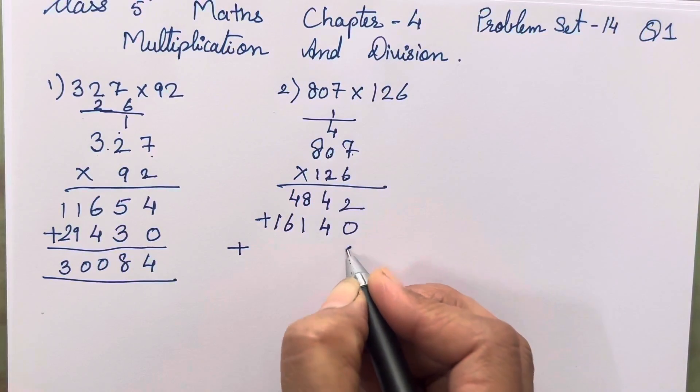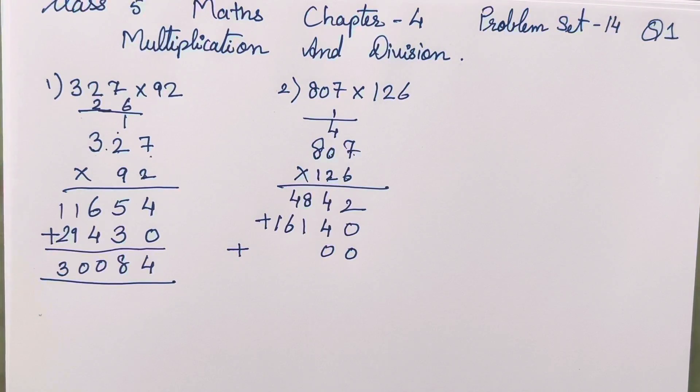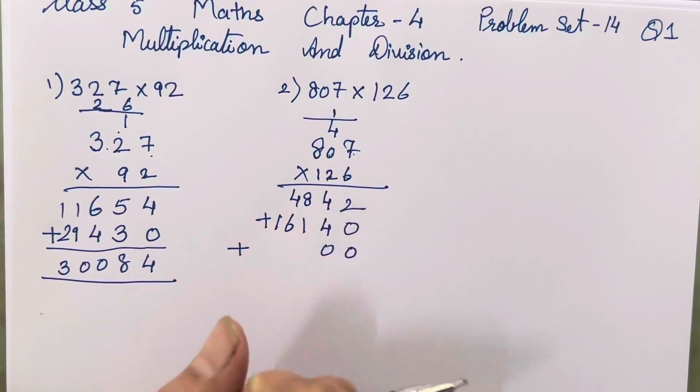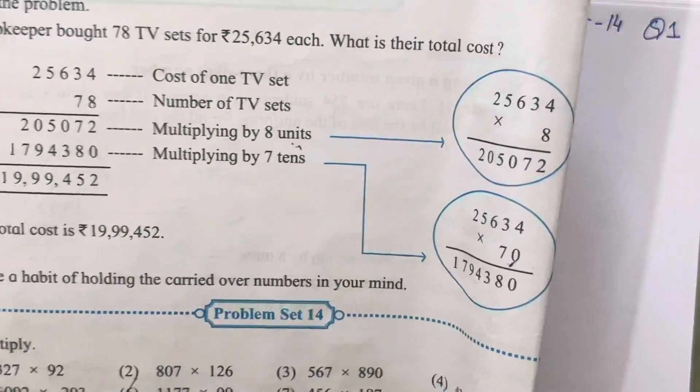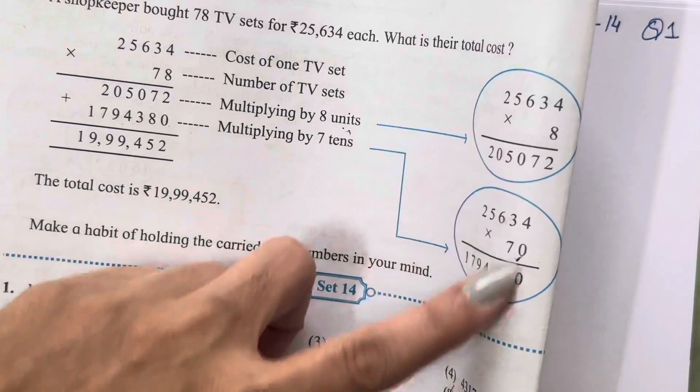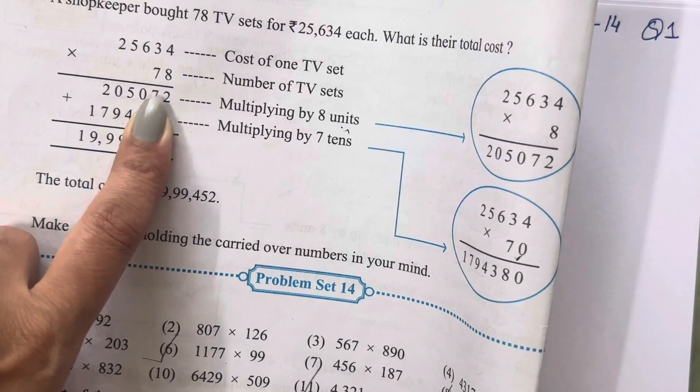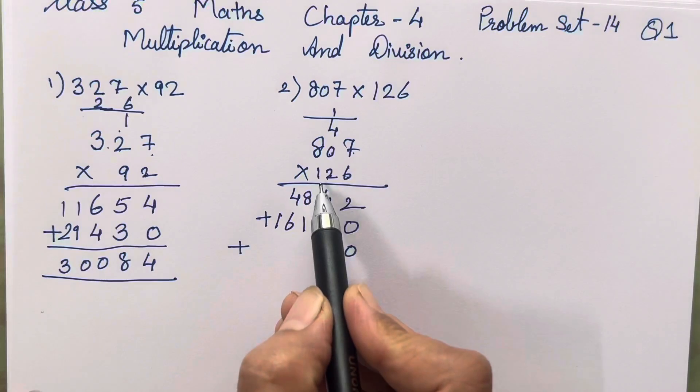We will be taking the next number. If you all have not understood how to multiply this all together in one method, then you can multiply it in a separate form, like it has been shown in the textbook also. Separately you can multiply in this way also, but it will consume time.